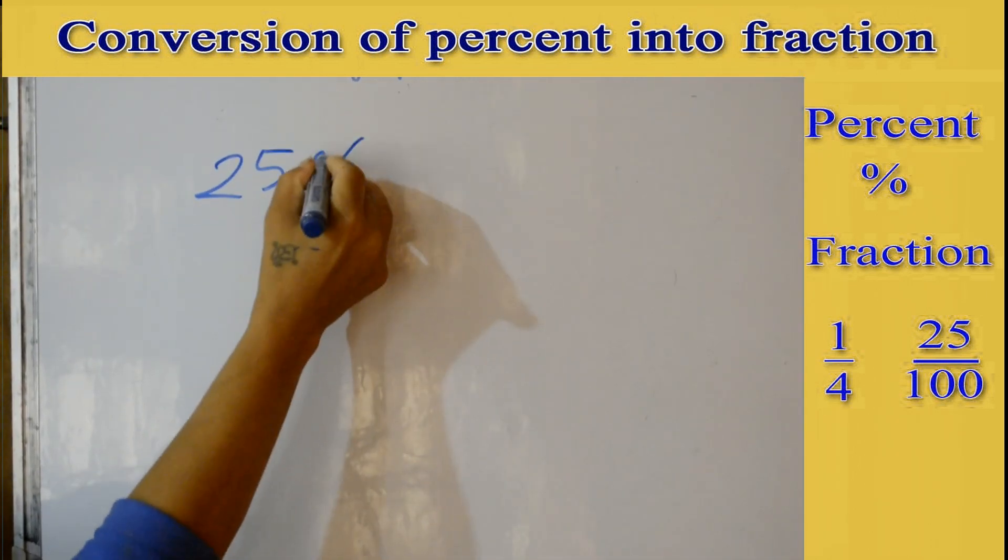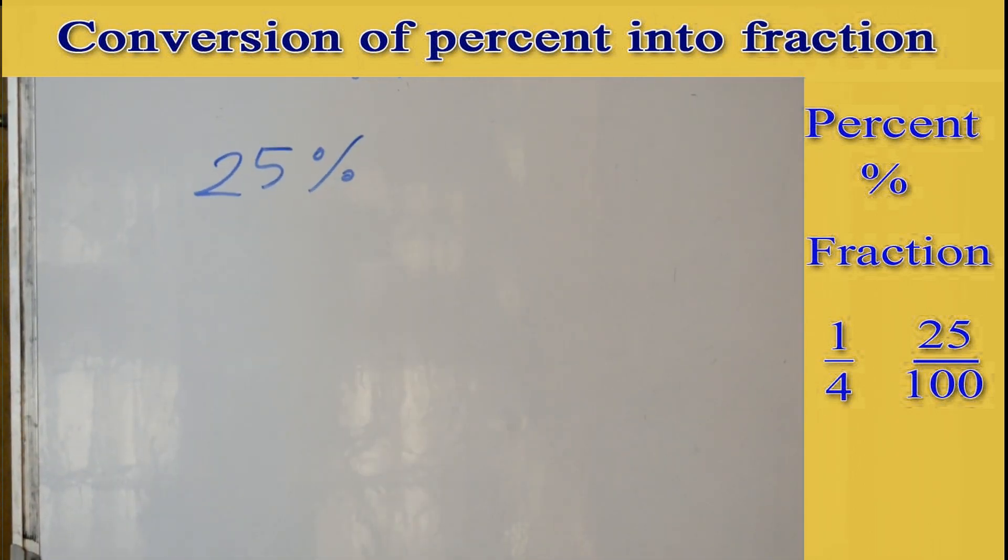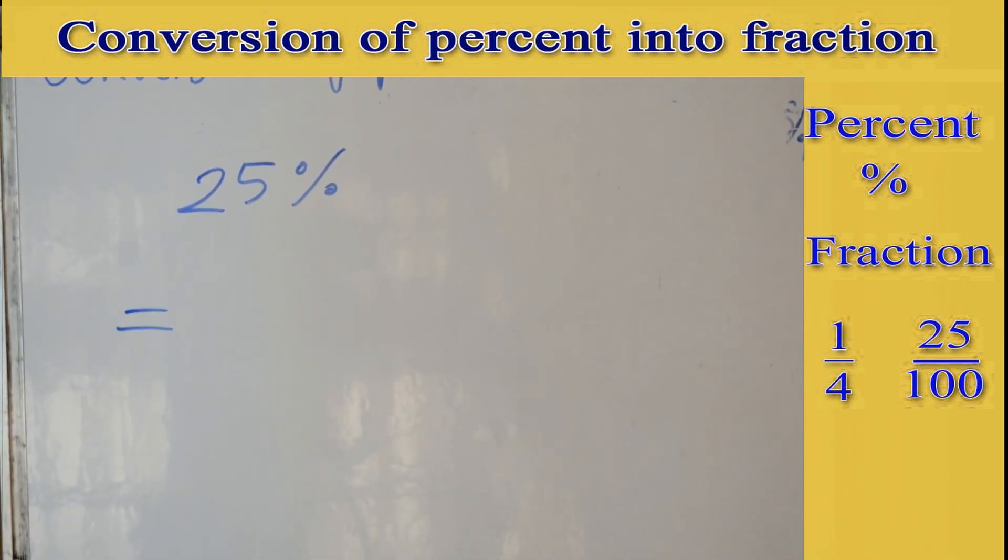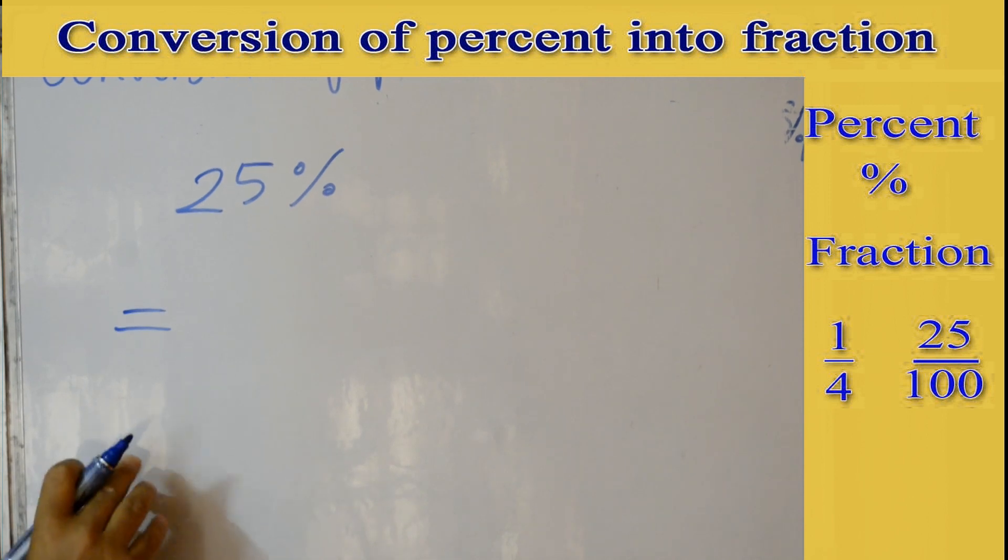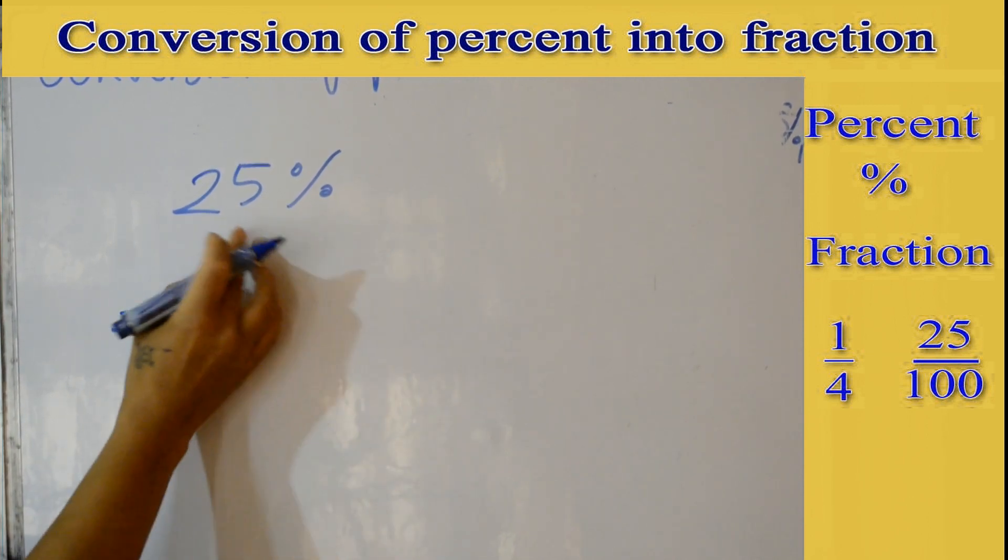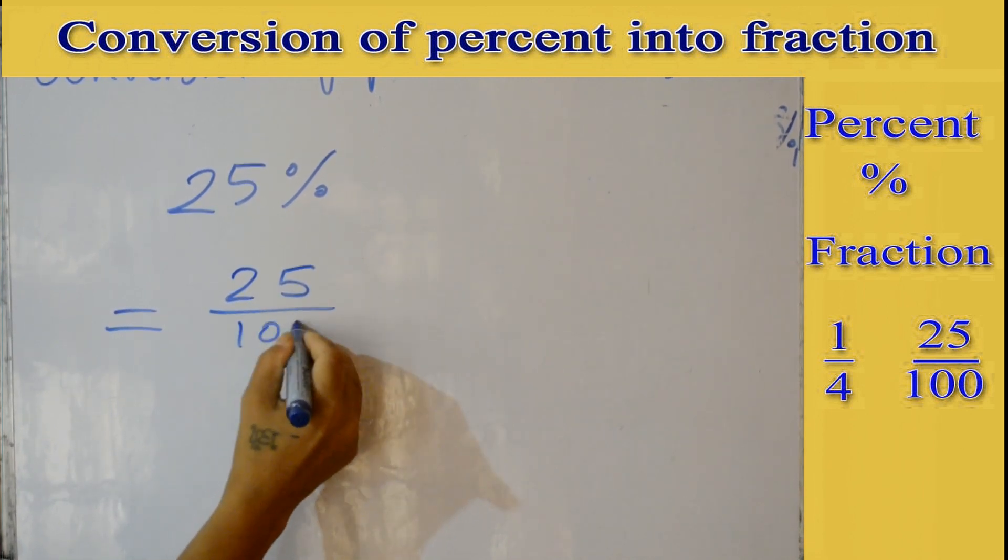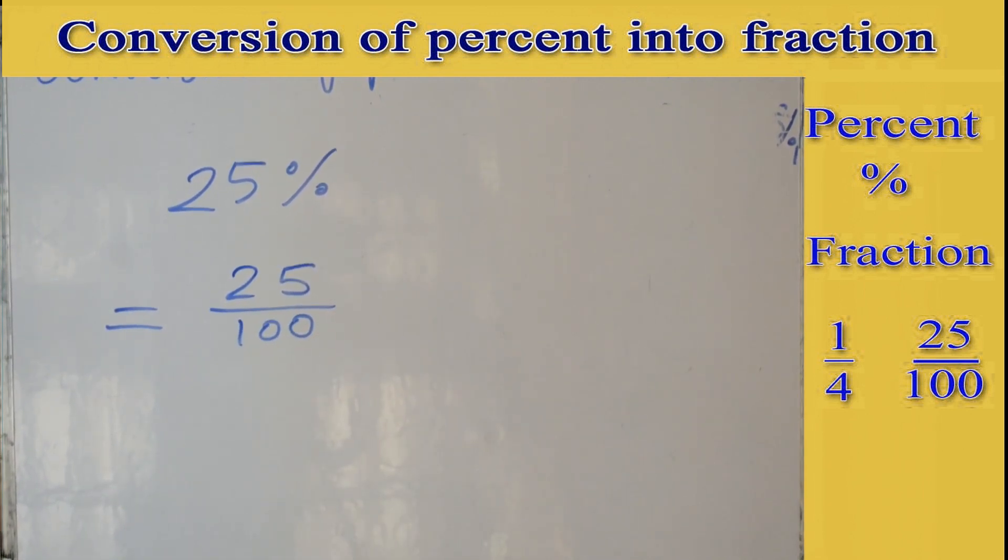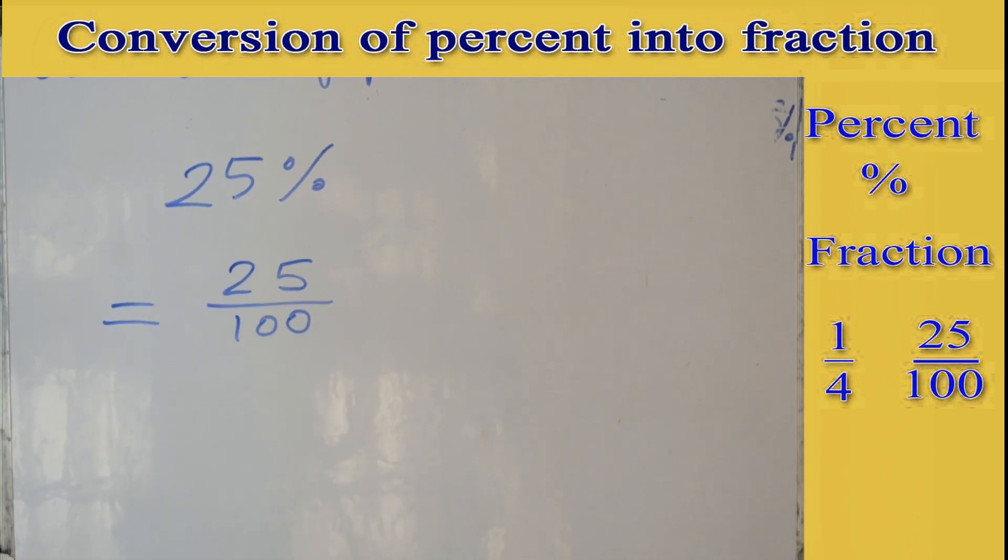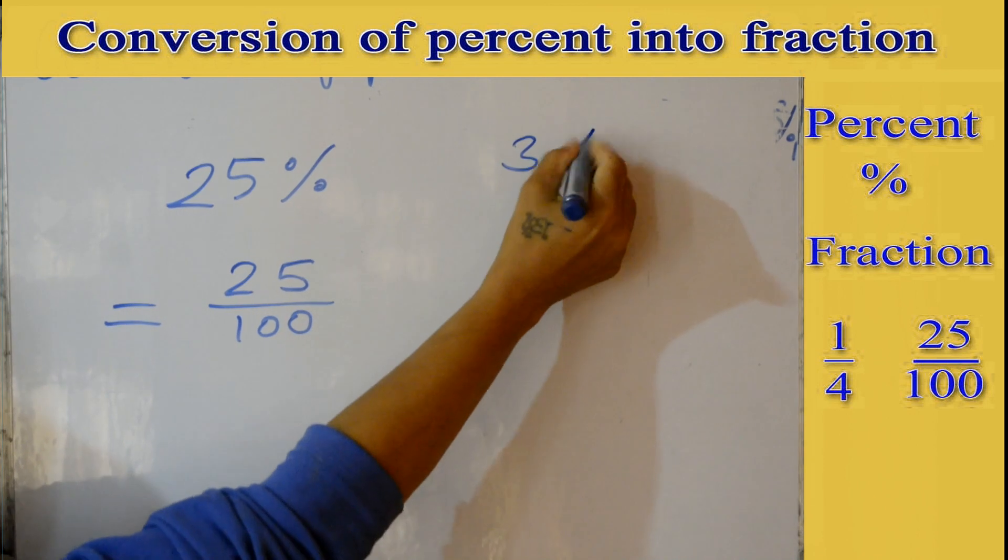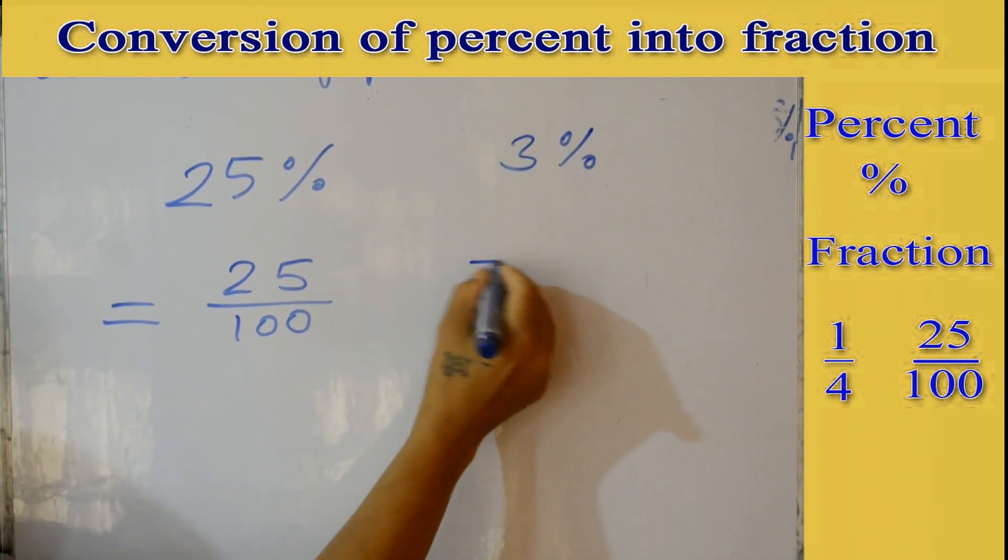25 percent - this is a percentage. How do we write it? You know percentage always comes out of 100, so this 25 is out of 100. What is the fraction of 25 percent? 25/100. Three percent is also 3 out of 100.